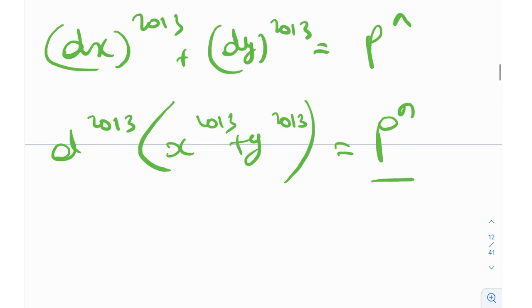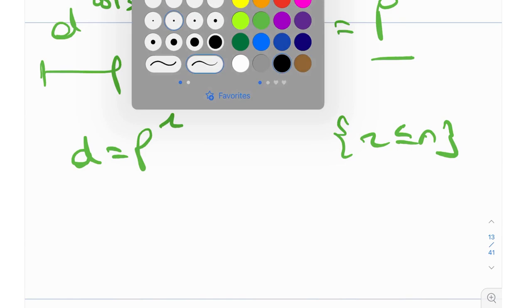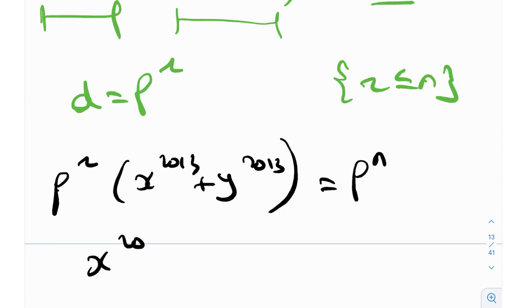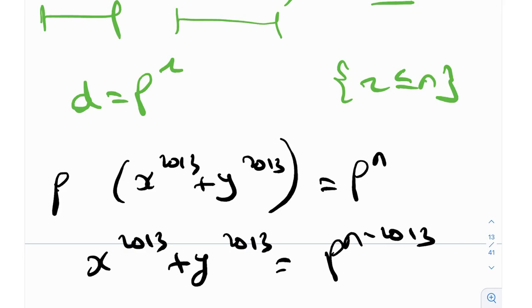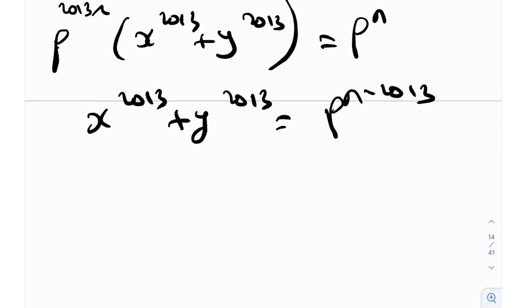So x^2013 + y^2013 = p^(n − 2013r). Now, since 2013 = 671 × 3, we can write x^(671·3) + y^(671·3) = p^(n − 2013r). Defining z = x^671, w = y^671, and s = n − 2013r, we get z³ + w³ = p^s.